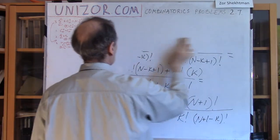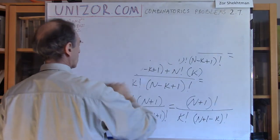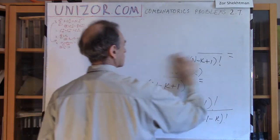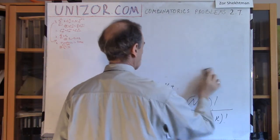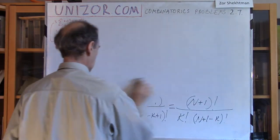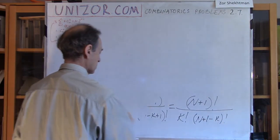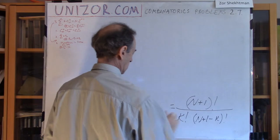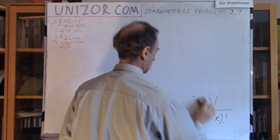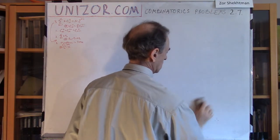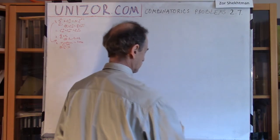Very simple. All you have to know is just how to express the number of combinations in factorial form.